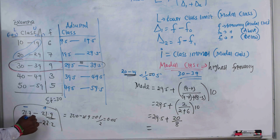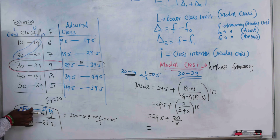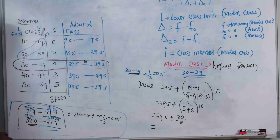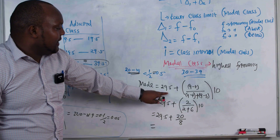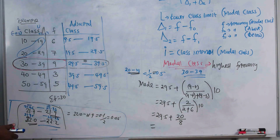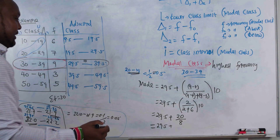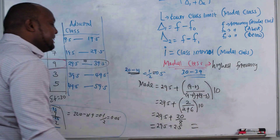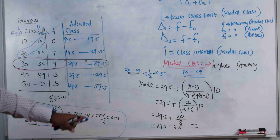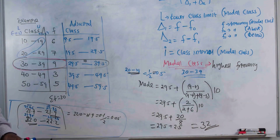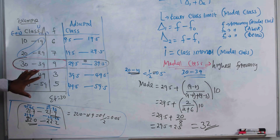So for that decimal example, subtract 0.05 from the lower limit and add 0.05 to the upper limit, giving adjusted classes like 21.65–21.95 and 21.95–22.25. Back to our problem: 20 divided by 8 = 2.5, so Mode = 29.5 + 2.5 = 32. The mode of the grouped data is 32.